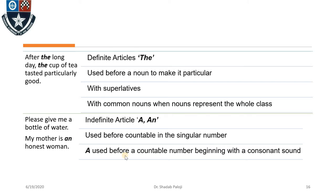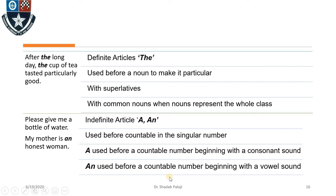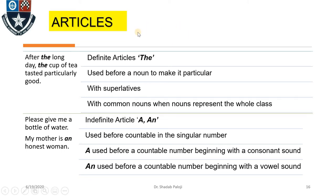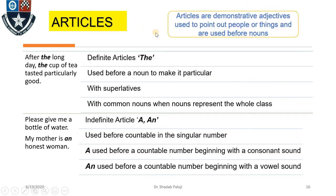In 'give me a bottle of water,' 'bottle' clearly starts with a consonant sound. But in 'my mother is an honest woman,' 'honest' may start with an H in spelling, but in pronunciation the H becomes silent and it starts with a vowel sound. So it is about the sound — as you feel the sound, your article changes. 'An' is used before a countable noun beginning with a vowel sound.